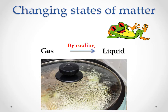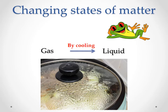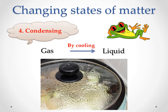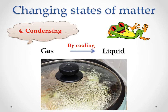The water vapor is a gas, and when it hits the lid it turns to liquid. So gaseous state changes to liquid state — this is done by the condensing process. The gaseous state changes to liquid state by condensing.